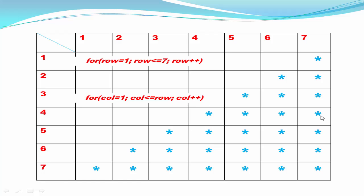Stars are printed after printing some spaces. You can see here: first print some spaces, then the star. In the first row, print six spaces then one star. In the second row, print five spaces then two stars. In the third row, print four spaces then three stars, and so on.